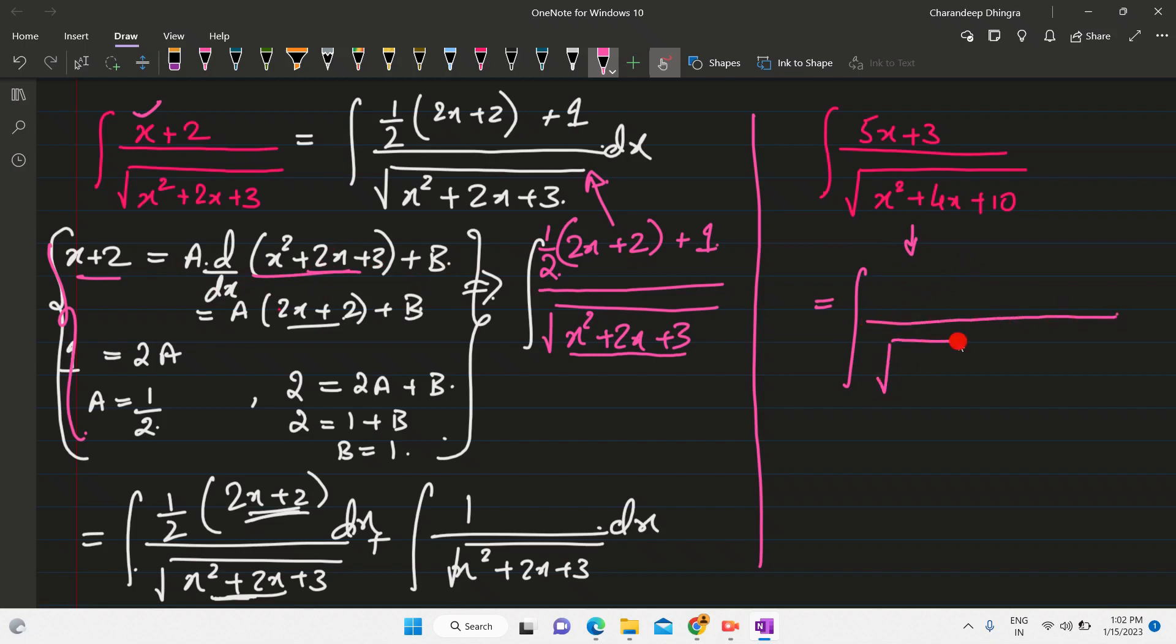you write the denominator, that is x squared plus 4x plus 10. This denominator, you take its derivative, that is 2x plus 4, derivative of 10 is 0. So you put a bracket,